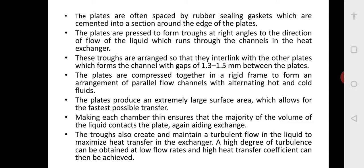The plates are often spaced by rubber sealing gaskets. To seal between the alternate plates, sealing gaskets are used. The plates are pressed to form troughs at right angles to the direction of liquid flow, which runs through the channels in the heat exchanger. These troughs interlink between the plates, forming channels with gaps of 1.3 to 1.5 mm. The plates are compressed together in a rigid frame to form parallel flow channels with alternating hot and cold fluids, producing an extremely large surface area for the fastest possible heat transfer.